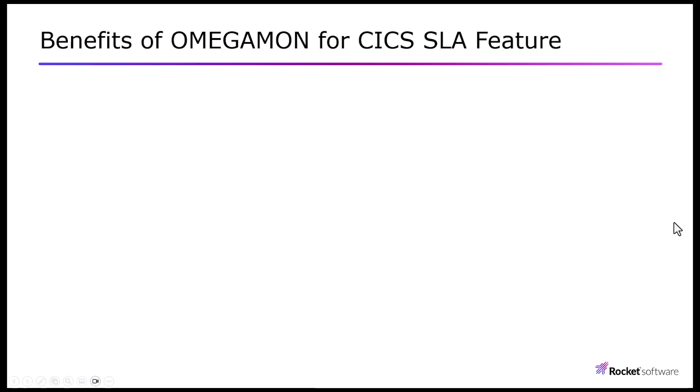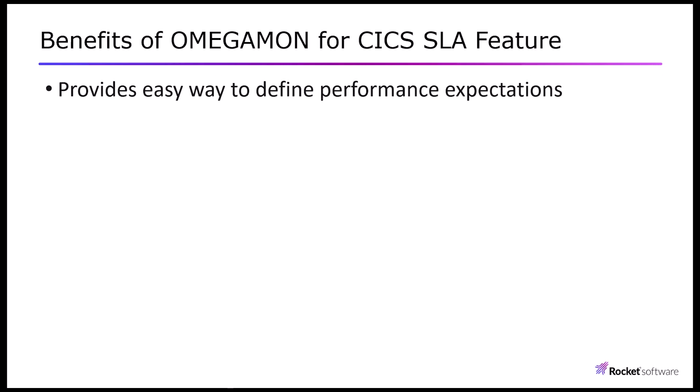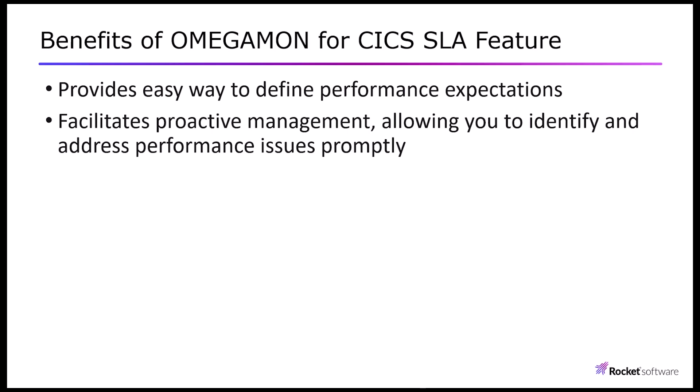If you are not using Omegamon's service level analysis feature yet, you should start to use it, as it could bring numerous benefits. Firstly, SLA provides an easy way to define performance expectations, ensuring that your CICS region's performance aligns with your business requirements. By establishing specific performance goals, SLA enables you to measure and monitor the actual performance of your CICS region against these targets. This monitoring capability facilitates proactive management, allowing you to identify and address performance issues promptly, before they impact users or breach your business SLA targets.